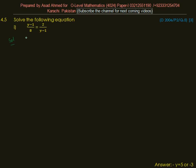Since we are asked to solve the equation, we have to find the value of the variable, and the variable is y. Let us try y minus 1 upon 8 is equal to 2 upon y minus 1.